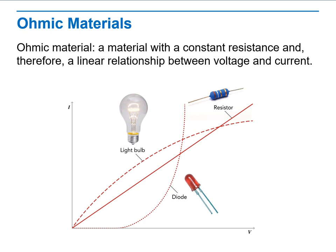It is a material with a constant resistance and therefore a linear relationship between voltage and current. So which one of these has a linear relationship between voltage and current? As you can see, the resistor. So we have light bulb, we have diode, and we have resistor. The only one that has a linear relationship is the resistor, so it is an ohmic material.